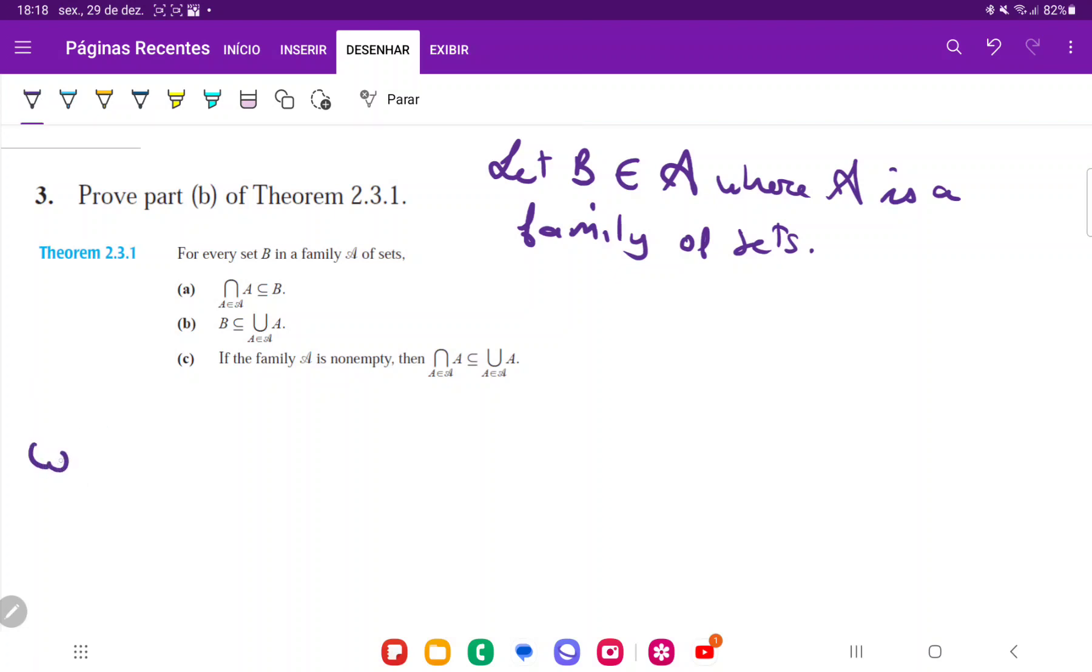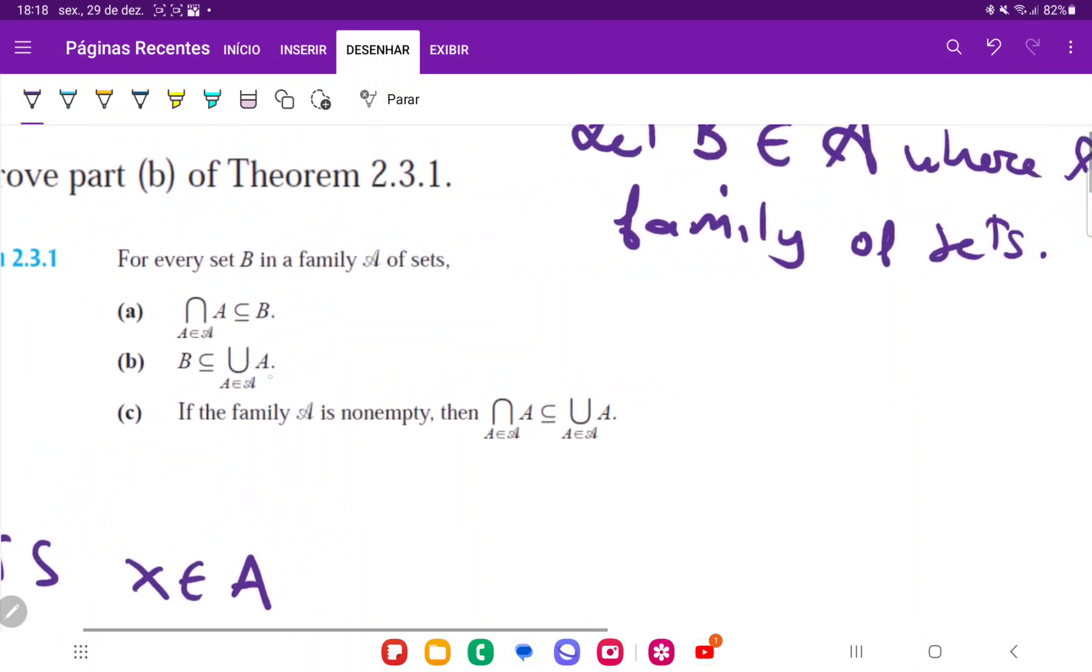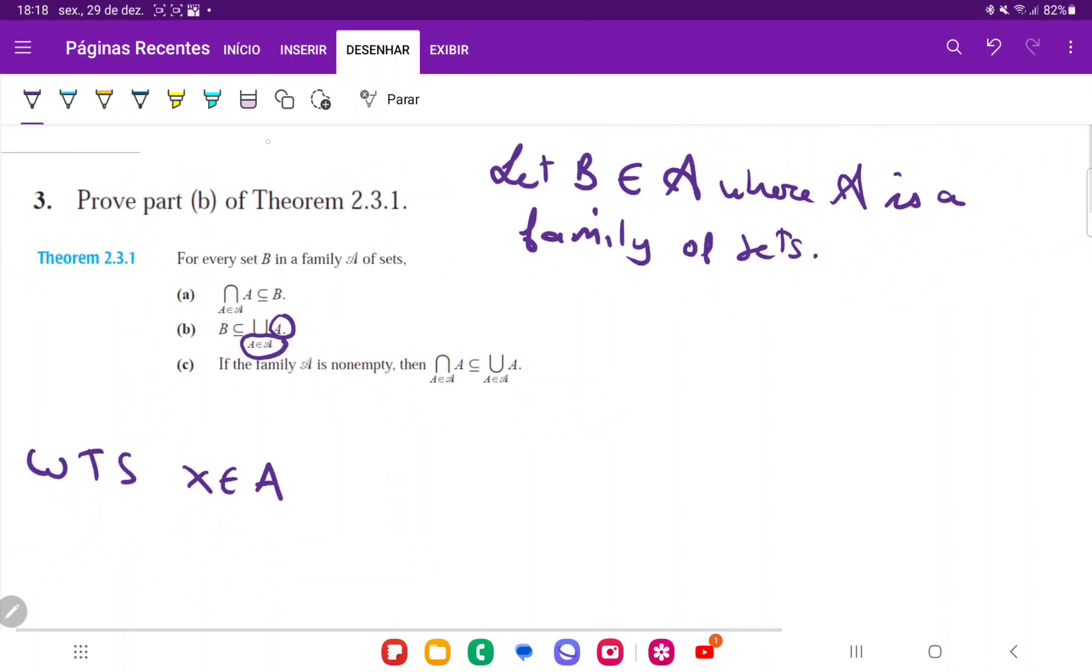So what we want to show is that X belongs to A, where A is a set. This notation here, we're saying it belongs to some A, which is this A over here, that belongs to the family that is the subscript A. So we want to show that X belongs to some set, some A, for some set in that family.